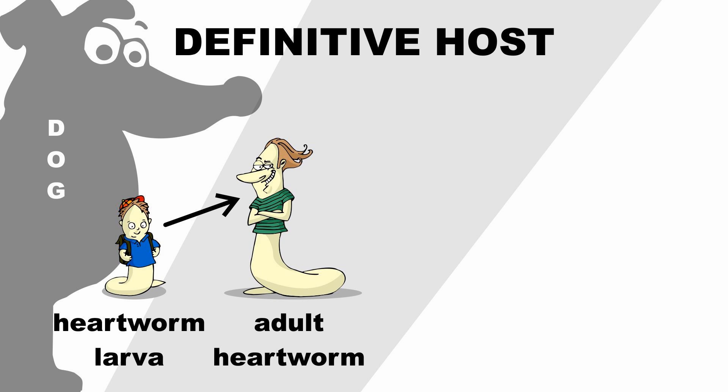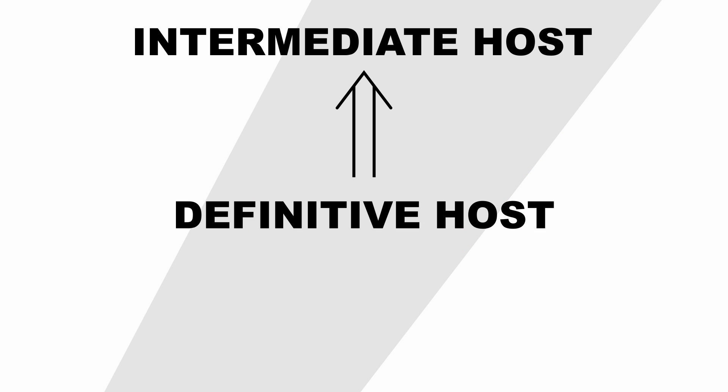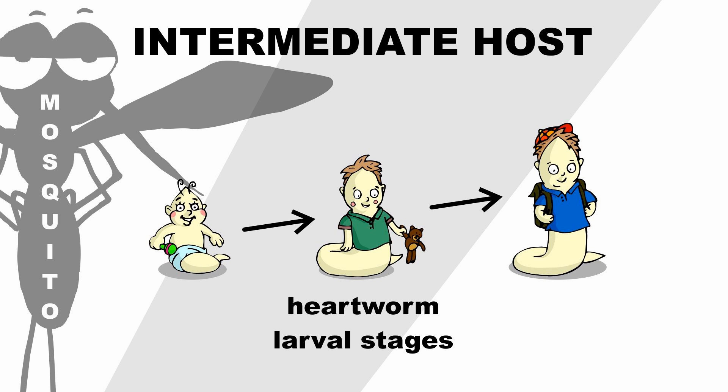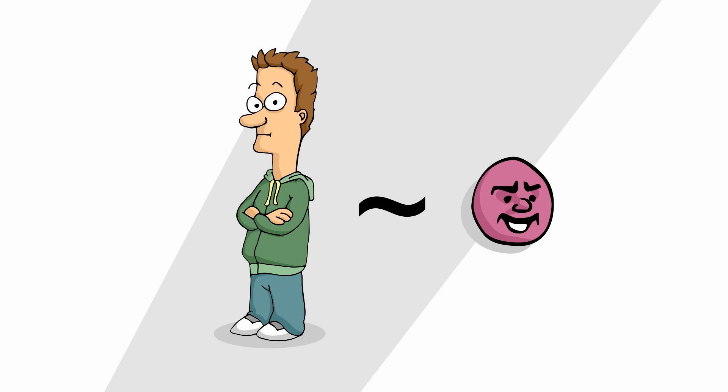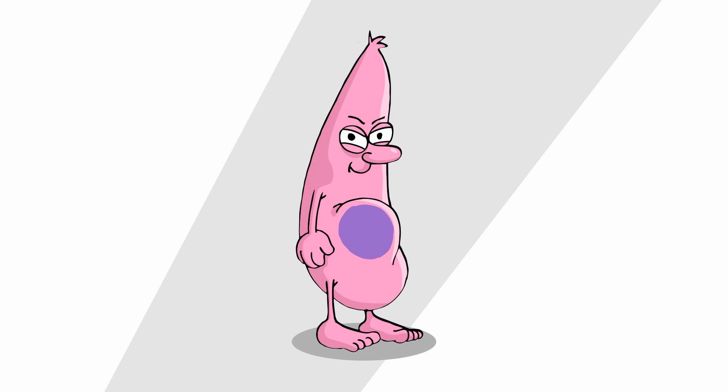Let's refine our definition a bit. The definitive host is the organism in which the parasite reaches its final, sexually mature form, or in which it reproduces sexually. The definition of the intermediate host can be deduced straight from that: it is the organism in which only sexually immature forms of the parasite develop. In a human comparison, it may be the kindergarten — but with kids these days, it's safer to say preschool.